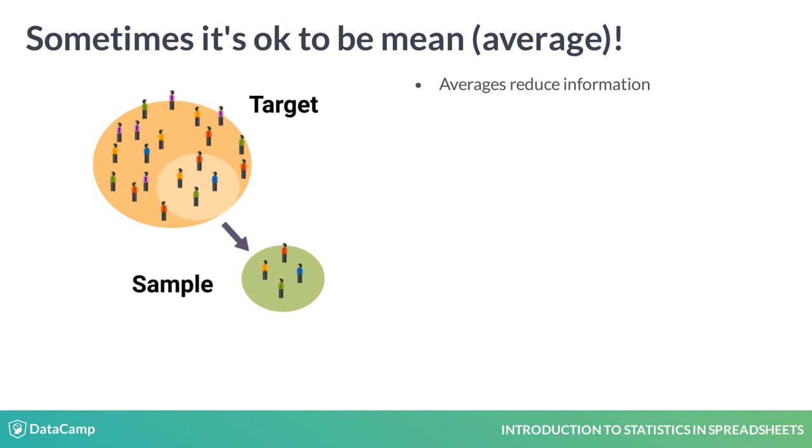For example, there are 126 million people living in Japan. That's a lot of people. You could look at a list of every person and their age to intuit something about the population's age. However, it's easier to take a mean average to understand the population.